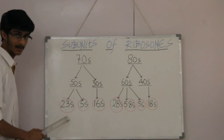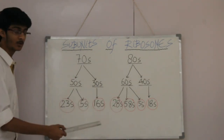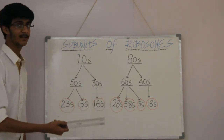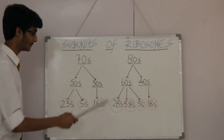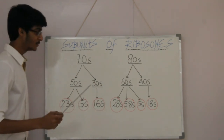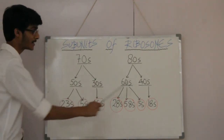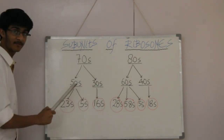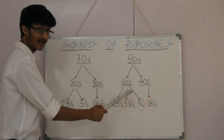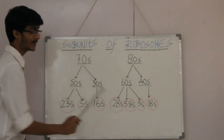For 30S, 30 divided by 2 is 15, but you have to add 1 — this is the smallest so it is the most naughty one. Therefore 30 divided by 2 is 15 plus 1 equals 16S. Also remember that the 5S subunit is present in both bigger subunits, 50S and 60S. And since 60S is larger than 50S, it has an additional 5.8S subunit.